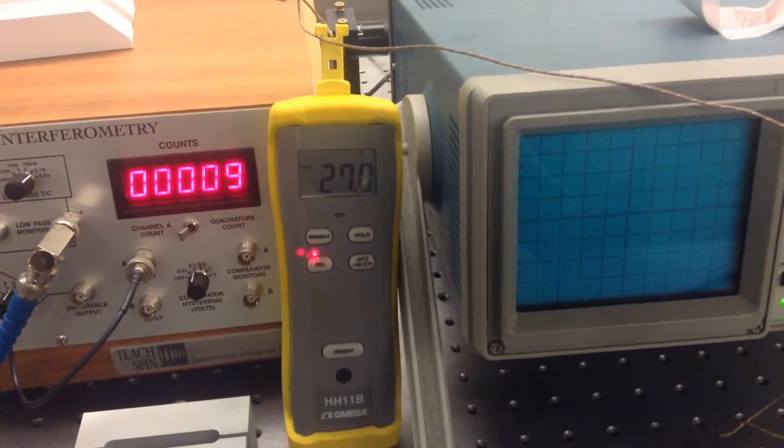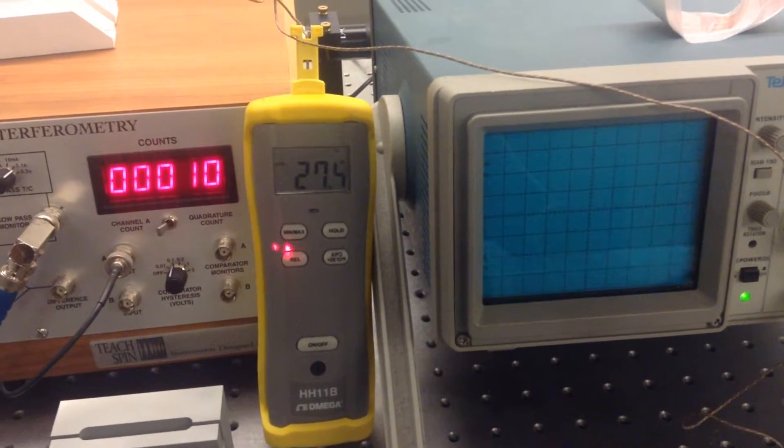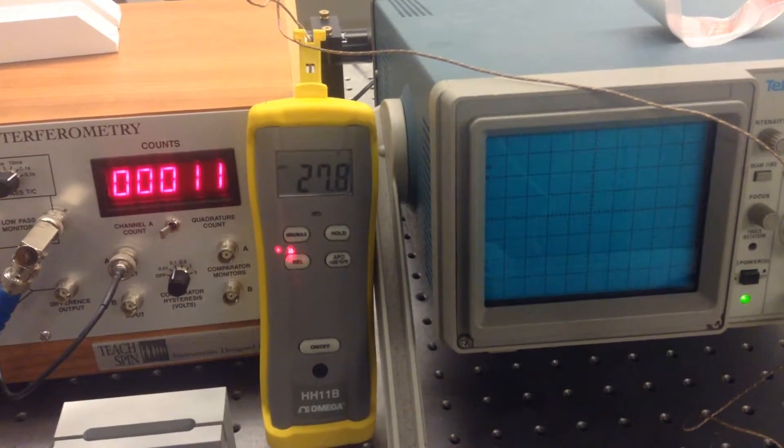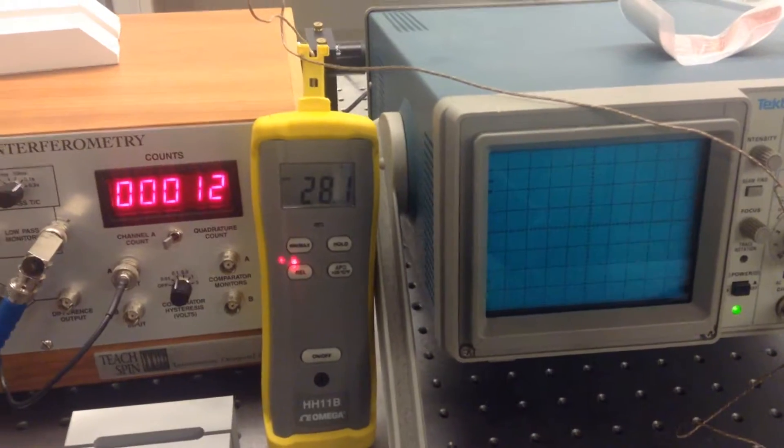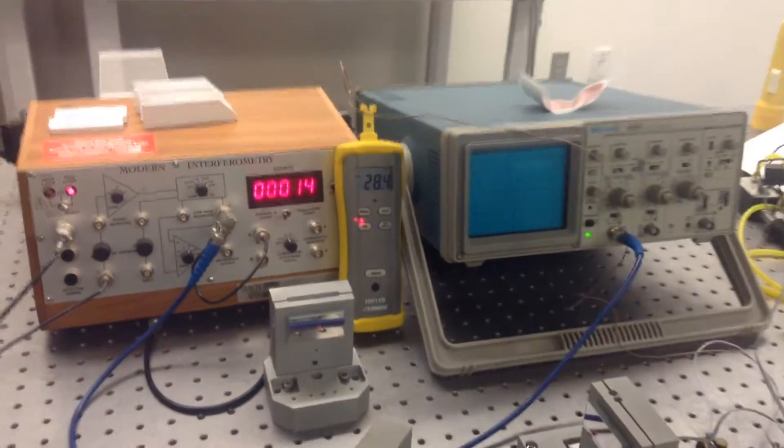Now when you're taking data, the best thing to do would be to just make a movie of it and then digitize it after when you go home. You can get the change in length delta L as a function of temperature, delta T.